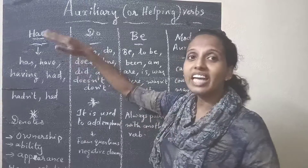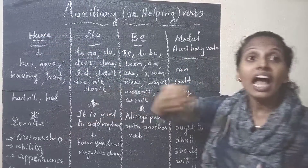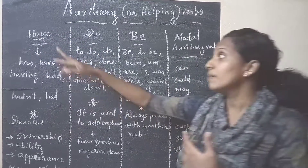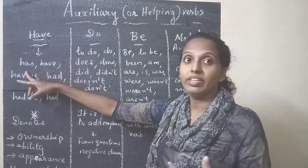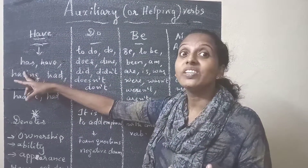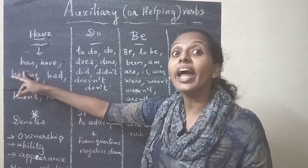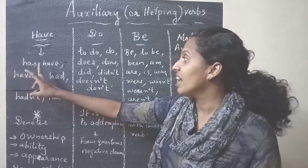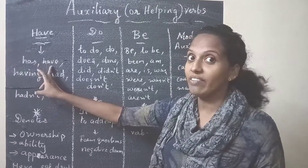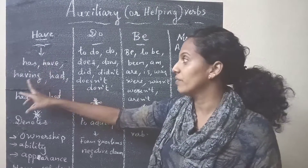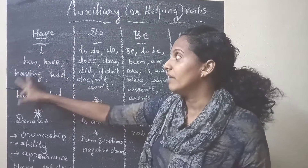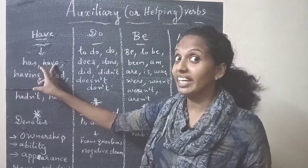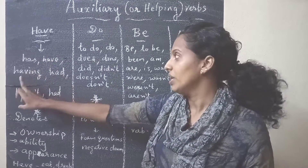Let's just take 'have.' Has is the form of have used with singular subjects — for example, 'she has.' With plural subjects, we write 'have' in the present tense.